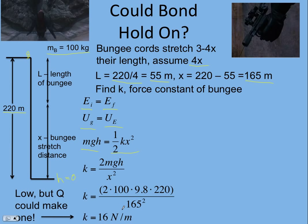Is that reasonable? Well, 16 newtons per meter is pretty low for a bungee cord — they're typically closer to 100. But since Bond has Q making his equipment, we're sure Q could make a stretchy bungee cord that's also strong enough for James Bond.